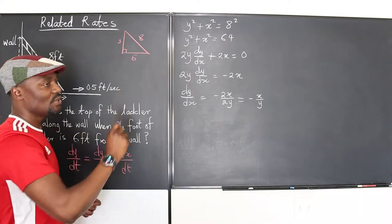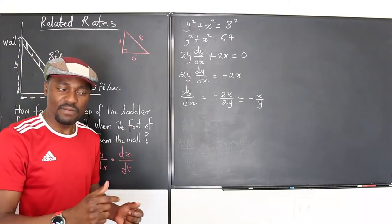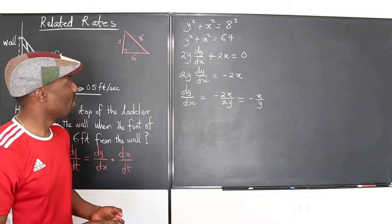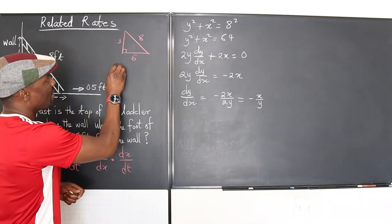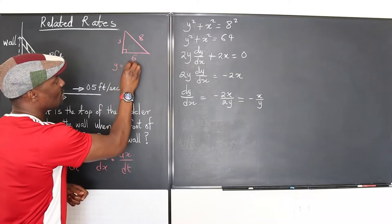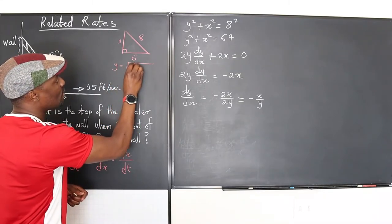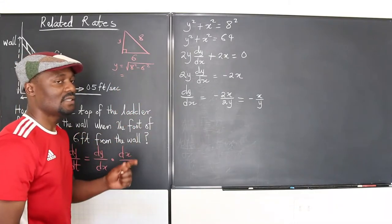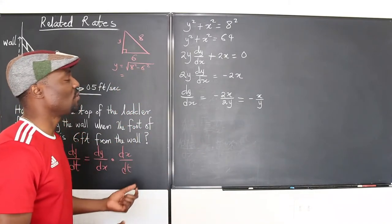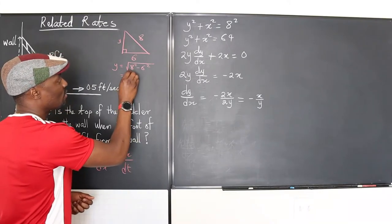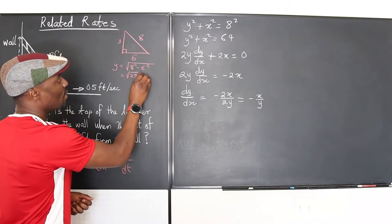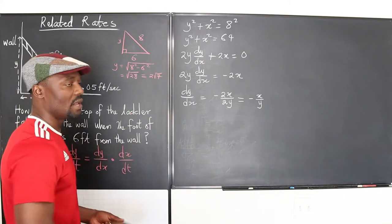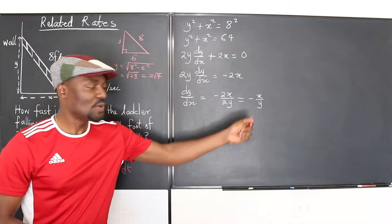From the Pythagorean theorem, y at this instant will be 64 minus 36. You take the square root of that—whatever you get will be your answer, and I think that will be the square root of 28. So we're going to have y equals the square root of 8² minus 6², that would be 8 minus 6 times 8 plus 6, so that would be 28. So it would be the square root of 28, which would be the same thing as 2√7. That's what y is going to be at this point.